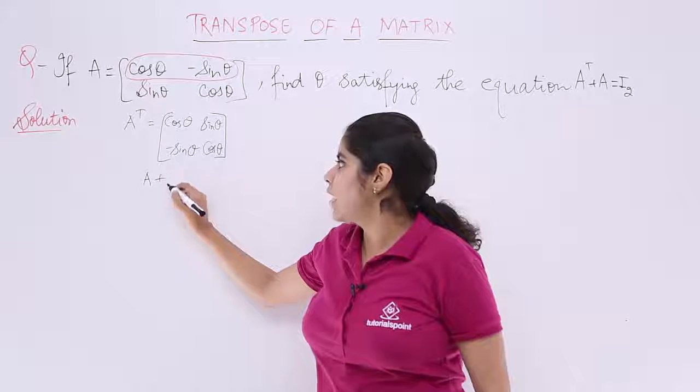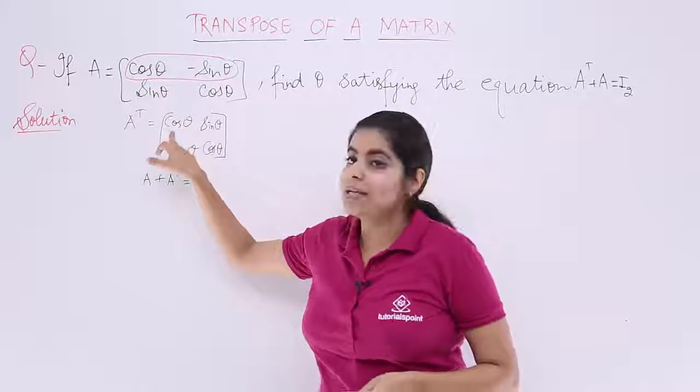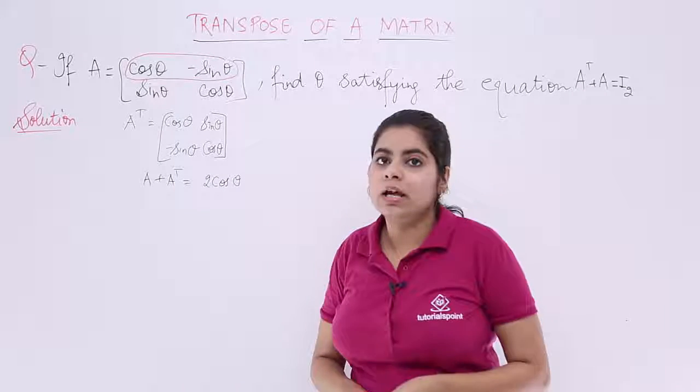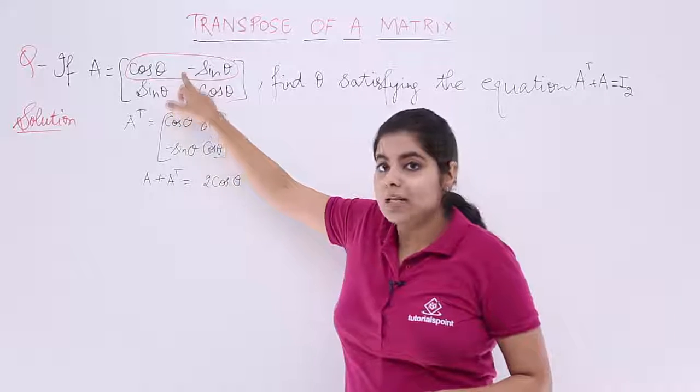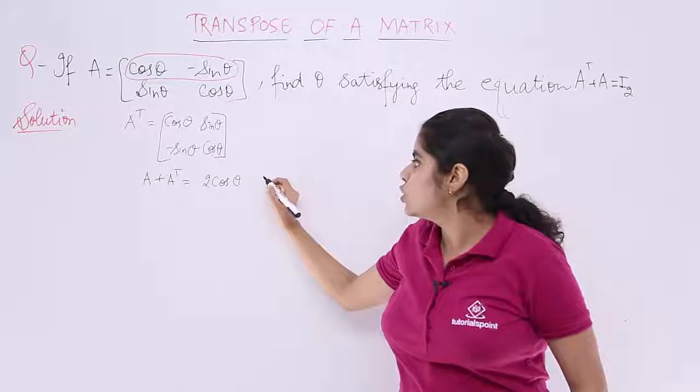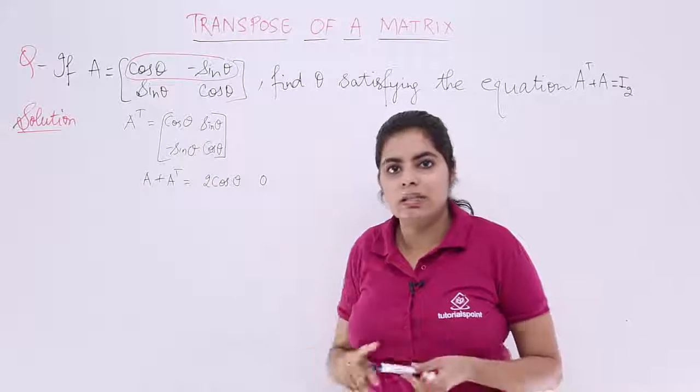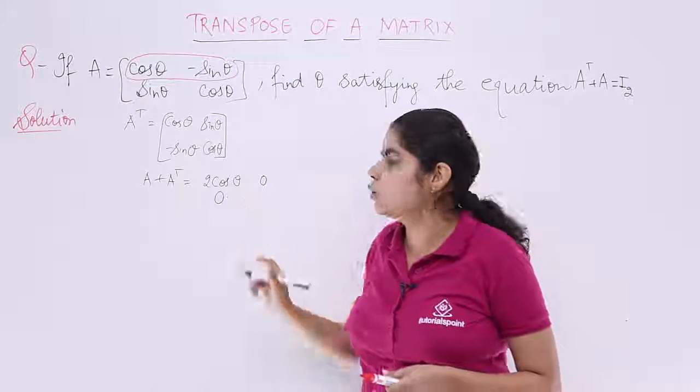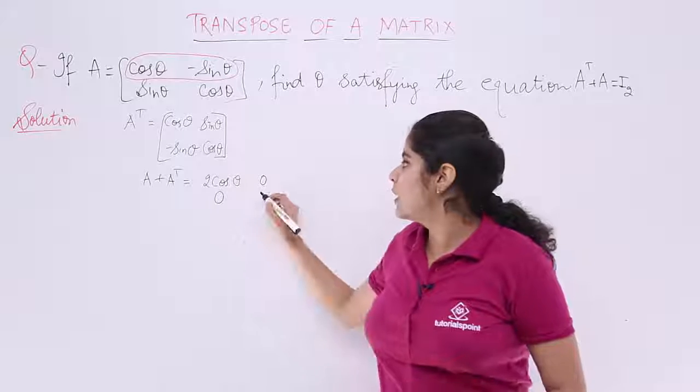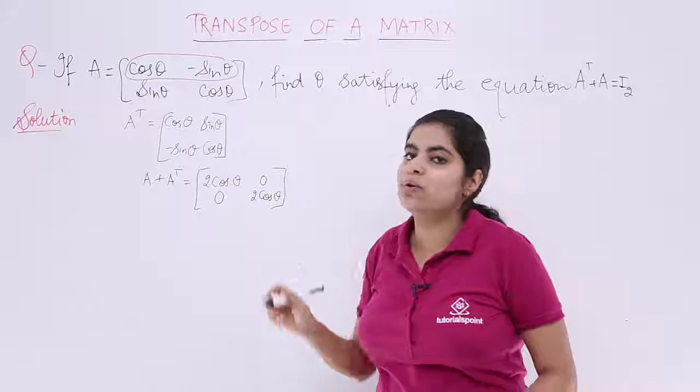A plus A transpose or A transpose plus A is what? Cos theta plus cos theta, 2 cos theta. I write here 2 cos theta. Minus sin theta plus sin theta, both are added, becomes 0. Next, sin theta minus sin theta, again 0. Last, cos theta and cos theta both added becomes 2 cos theta. This is a 2 by 2 matrix.